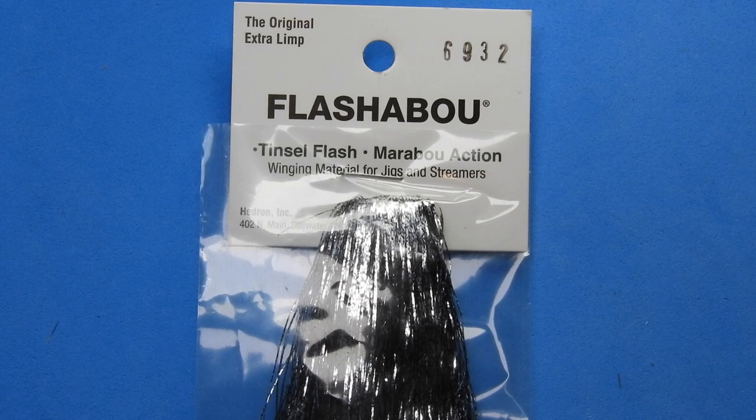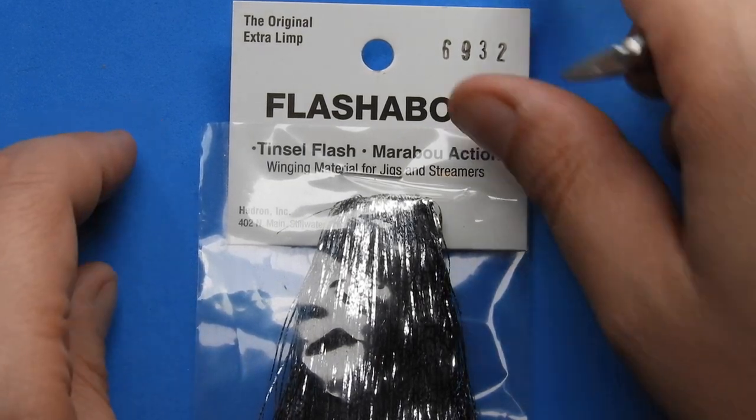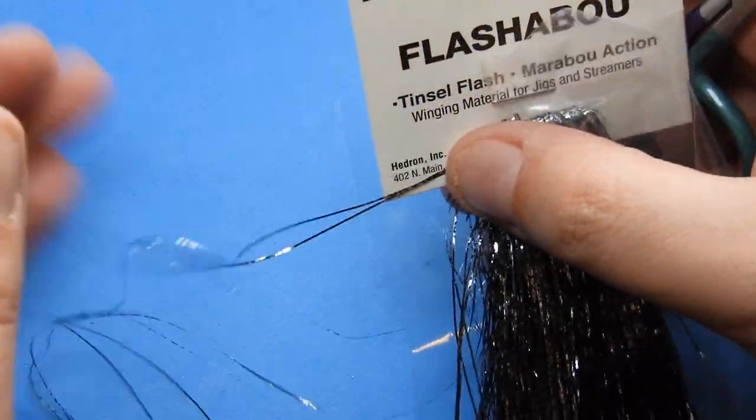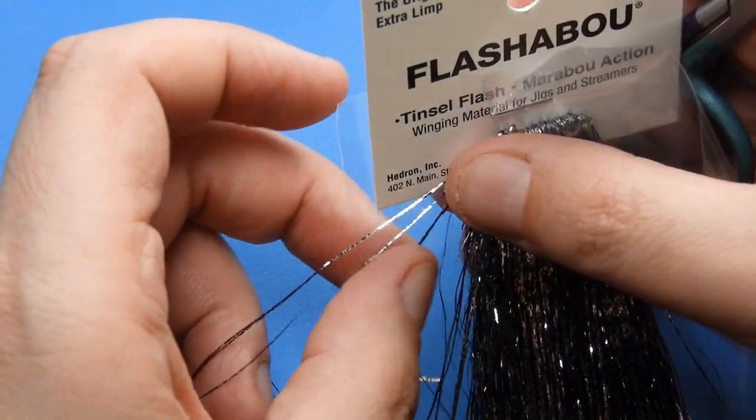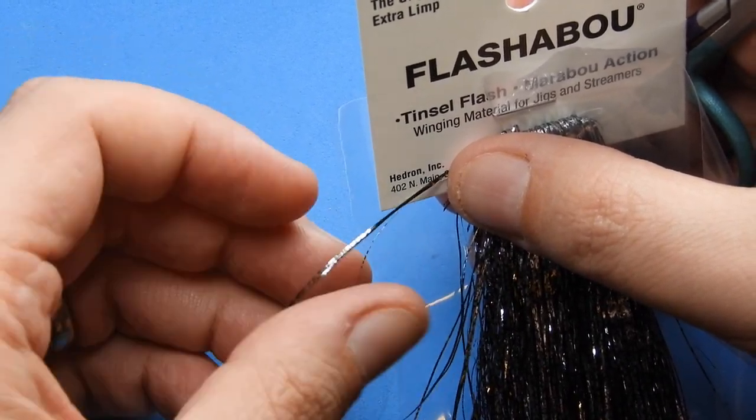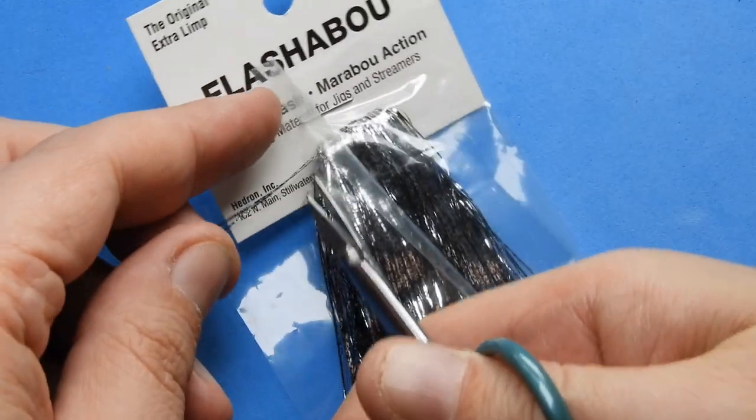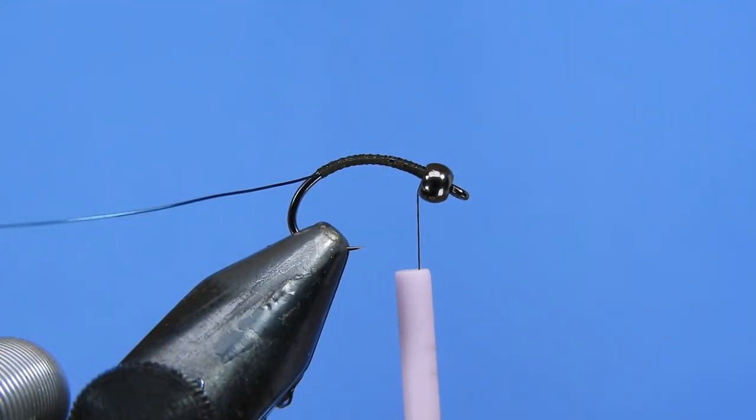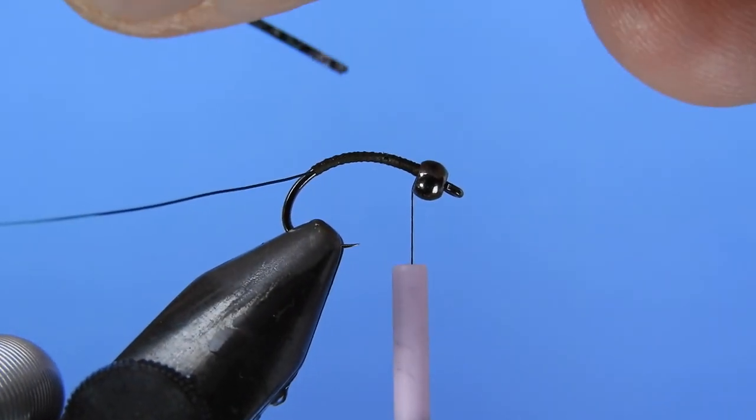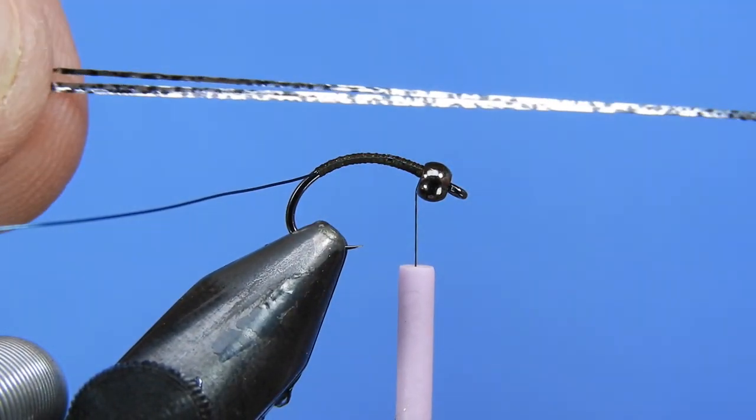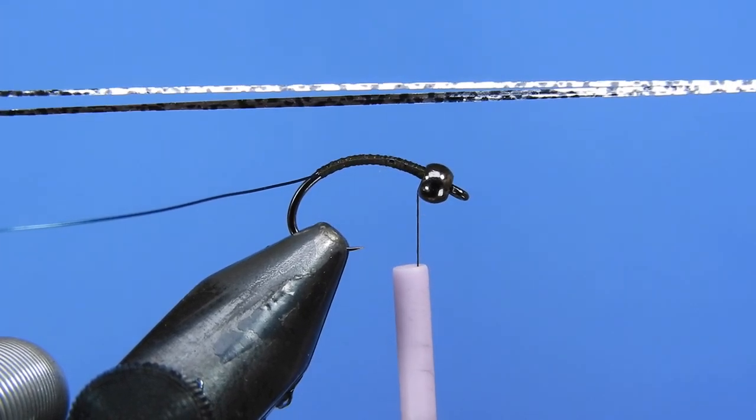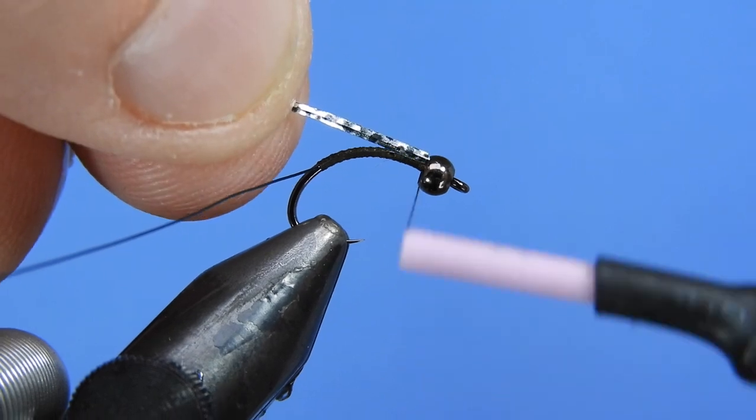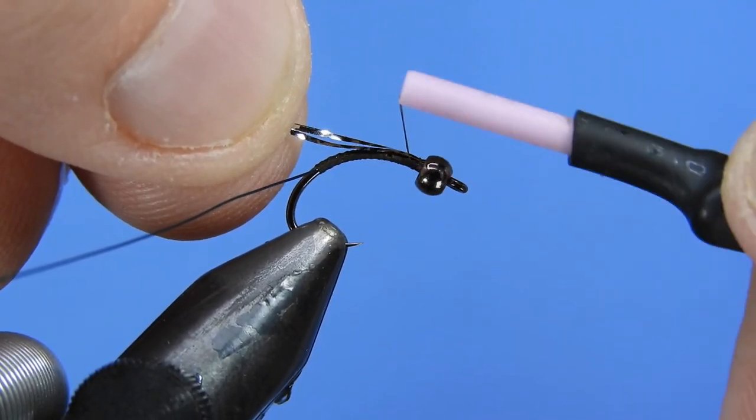We're going to go grab our next material which is this silver speckled flashabou and we're just going to pull out about three or four strands of this. Four looks to be about right. If you're tying a smaller fly you can probably use three and we'll just make sure those tips are evened up. You can see it's got a nice speckled appearance. This is going to kind of tone down on the brightness of it a little bit.